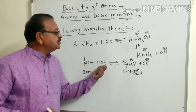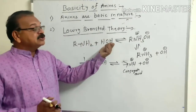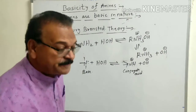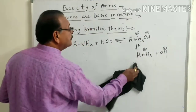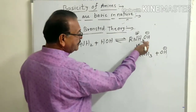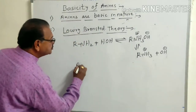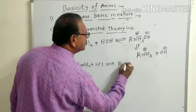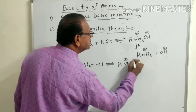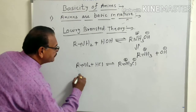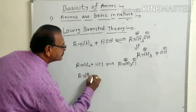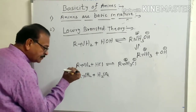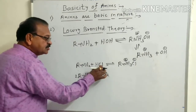As amines accept a proton in aqueous medium, they act as proton acceptors and therefore according to Lowry-Brønsted theory, amines act as bases. When amines dissolve in water, we get alkyl ammonium hydroxide. Also, when amines react with HCl, we get RNH3⁺ Cl⁻, that is alkyl ammonium chloride. Amines can also react with H2SO4 — as it contains two hydrogen atoms, you can take two molecules of amine.